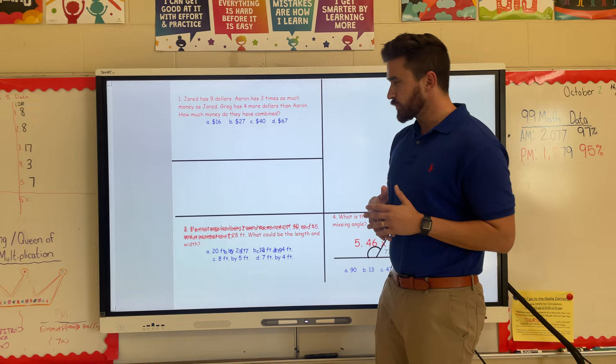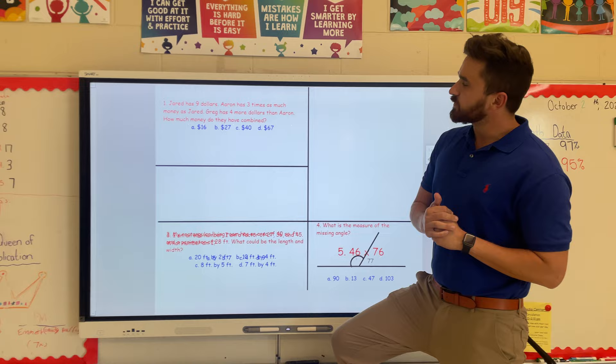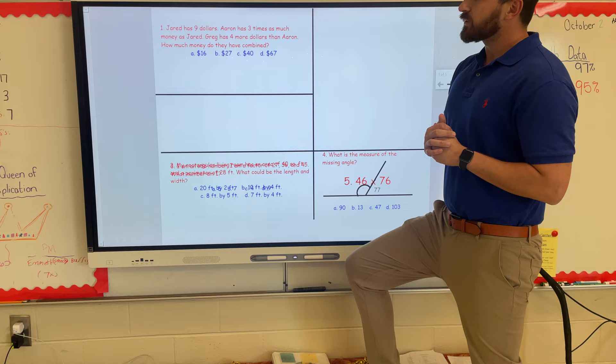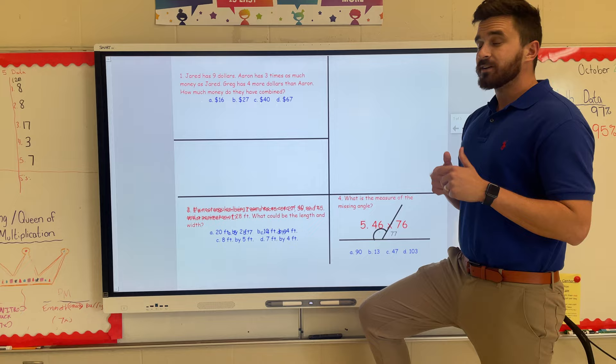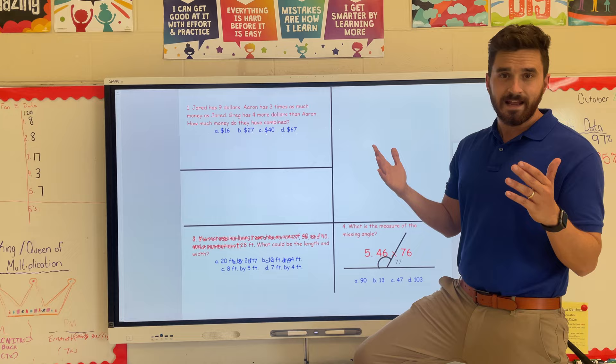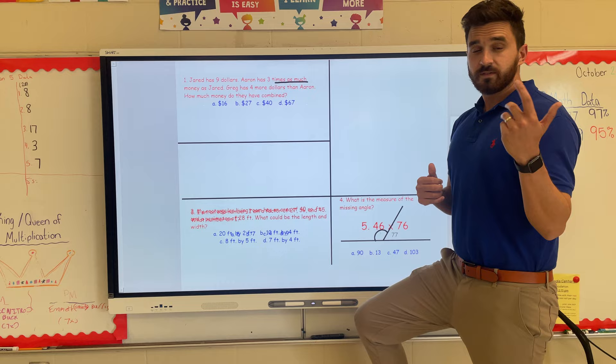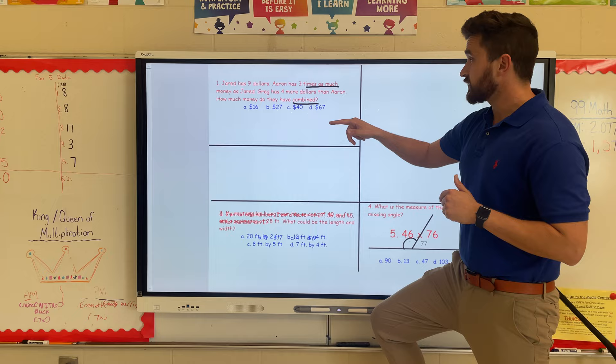For number one, it said Jared has nine dollars, Aaron has three times as much money as Jared, and Greg has four more dollars than Aaron. How much money do they have combined? Both classes struggled with this one today. They relied on their keywords a little too much because they saw 'combined' and just took 9, 4, and 3 and added them together.